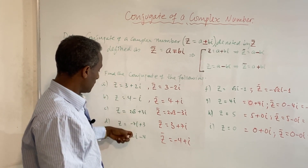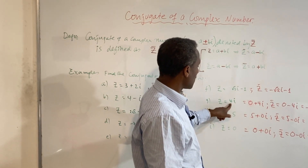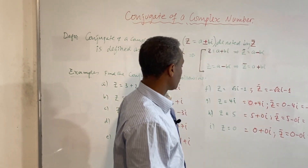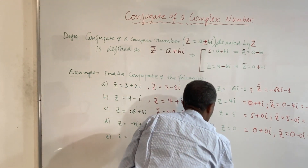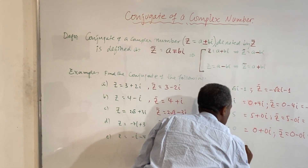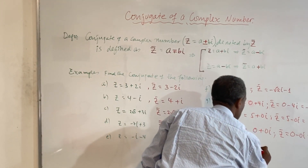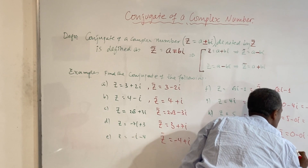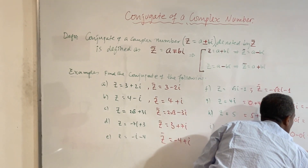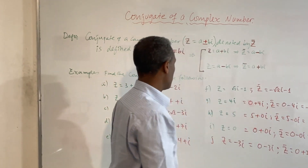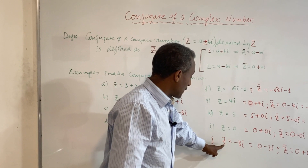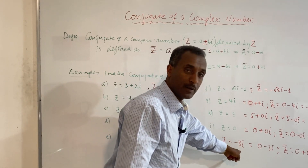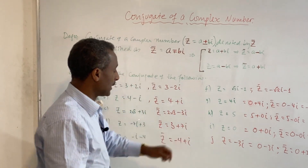When z has only an imaginary part, we change the sign of that imaginary part. So 4i becomes minus 4i, and minus 3i becomes 0 minus 3i, whose conjugate is 0 plus 3i, which is simply 3i. When you have a complex number with only an imaginary part, its conjugate is simply the negative of the original.